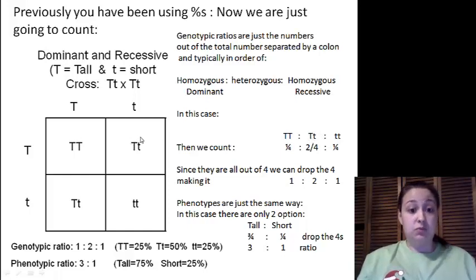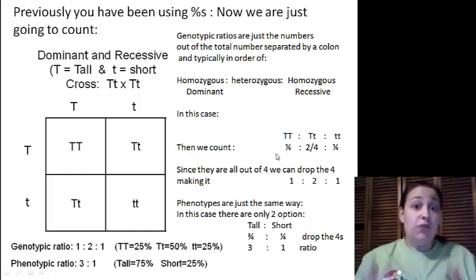Big T little t's, we have two. So we have one and two here, we'll put a two. Then you have a little t little t right here, which is going to be one. Since they're all over four, we can drop that four. So the ratio comes out to be a one to two to one ratio.